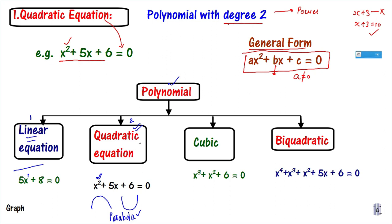This parabola is in our syllabus. Cubic is not in our syllabus — this is just for your information. If the highest degree is 3, it is a cubic polynomial. The factorization of cubic was in class 9th polynomial chapter. Also for information, if the highest power is 4, we call it bi-quadratic. Let's focus more on Quadratic Equation.